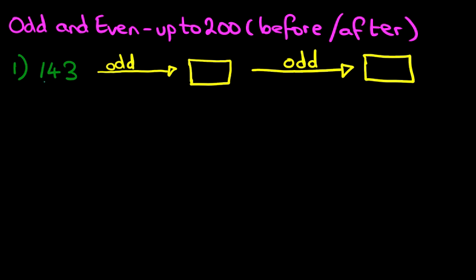Now how do we do that? Well, we're going to ignore the first two digits — we're only interested in the units. Now is three an odd number or an even number? We know from the previous tutorials that all the odd numbers start at one and you count in twos: one, three, five, seven, nine. And because this is a three, that means that 143 is an odd number.